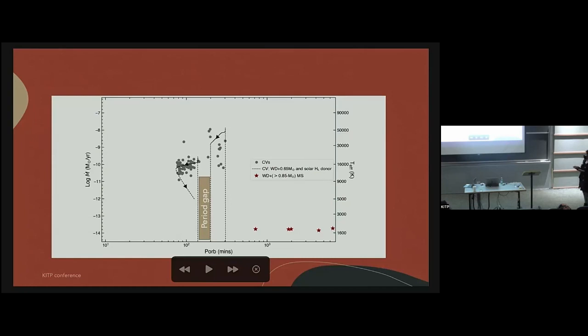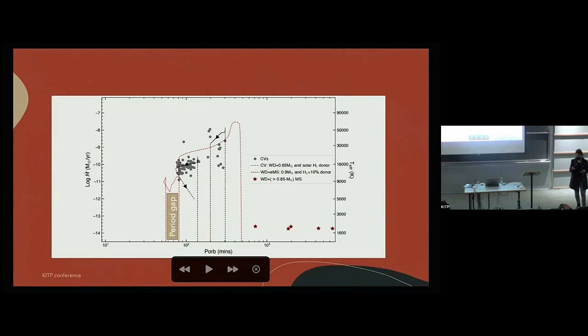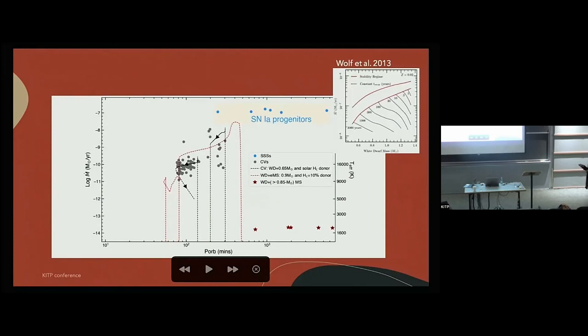Finally, for CVs here we have accretion rate as a function of orbital period. The accretion rates measured for CVs are given by these gray dots and the theory of standard CV evolution is represented by this dashed black line. Here you see the period gap and here we see the minimum period that the system reached. If we use the same theory for an evolved CV that has a more massive initial companion, this is what we have: the red track. What we see is that the period curve shifts toward shorter orbital period and the same thing happens for the minimum period. This is very exciting because this evolutionary channel connects two exciting phenomena.